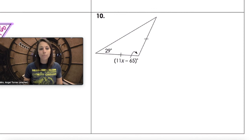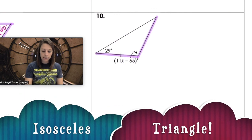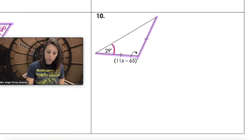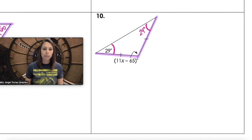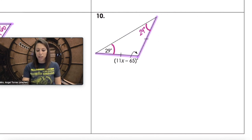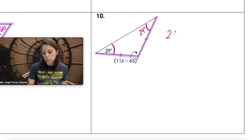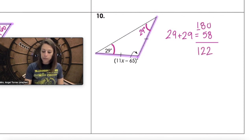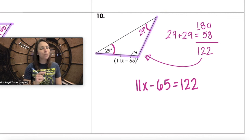The last triangle: we're given two congruent sides, so we're thinking isosceles. If the two legs are congruent, the two base angles are also congruent. If one base angle is 29 degrees, the other is also 29. Since 29 plus 29 is 58 and 180 minus 58 is 122, a simpler equation is 11x minus 65 equals 122.